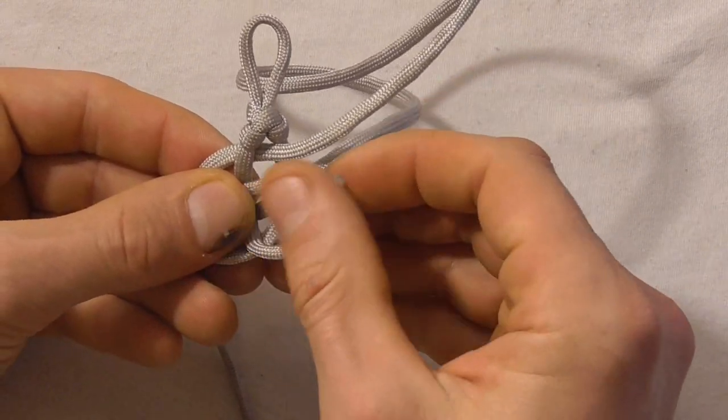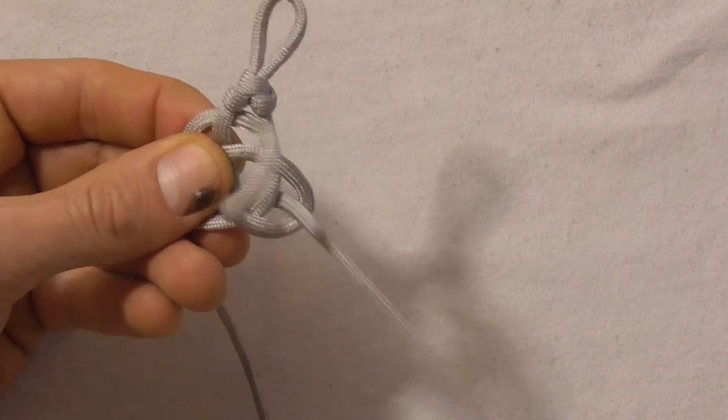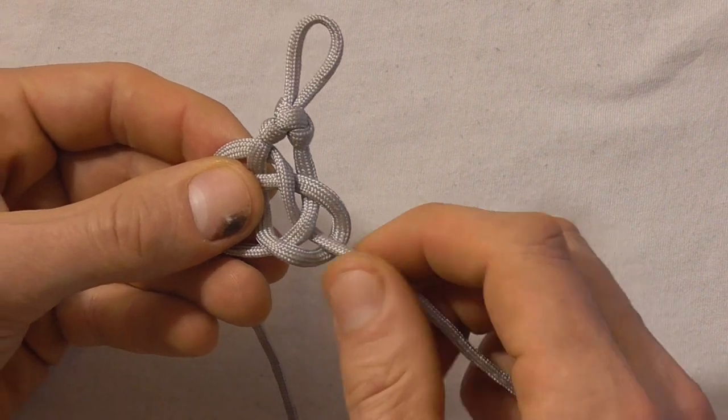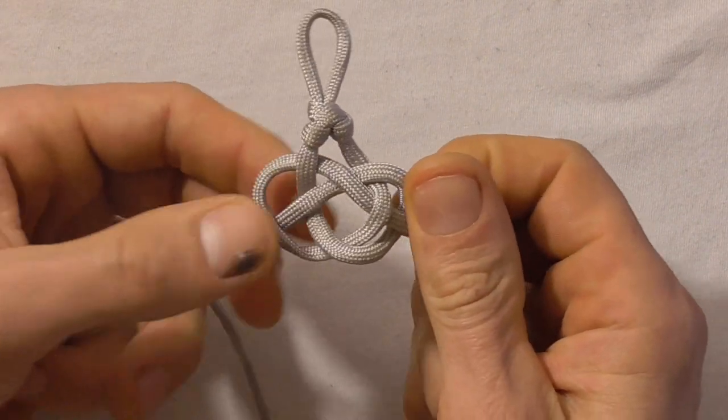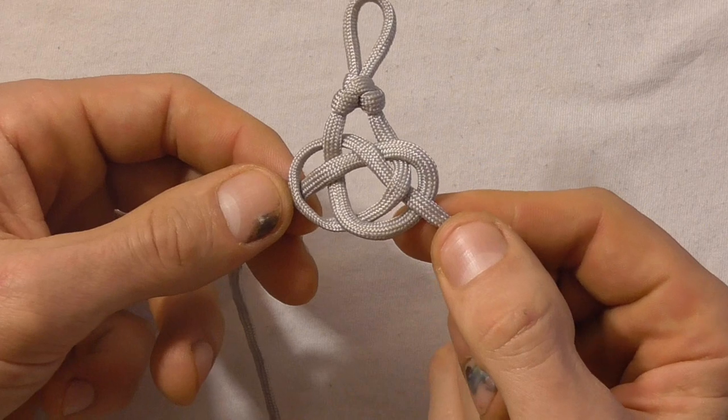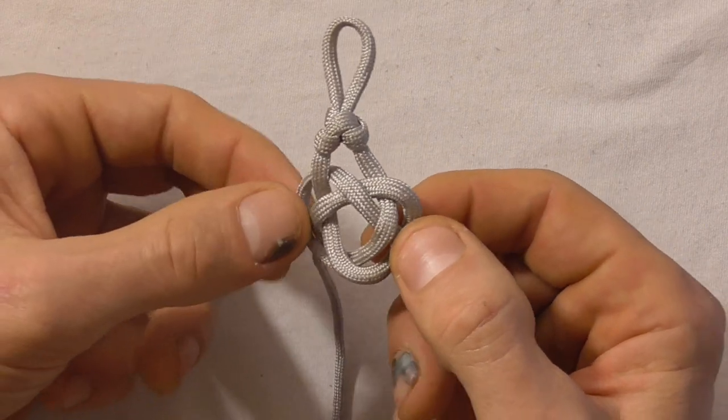Down through there, up through here, pull it through. So that's the shape of our Josephine knot.